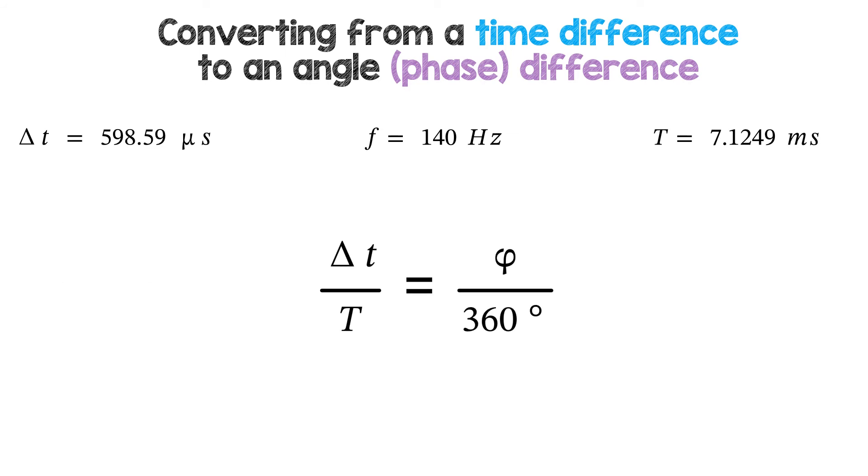So delta t compared to the period is the phase difference delta phi divided by 360 degrees. If we rearrange and multiply both sides by 360, we end up with the phase difference phi is equal to 360 times the time difference divided by the period, and make sure you use the correct units of time.